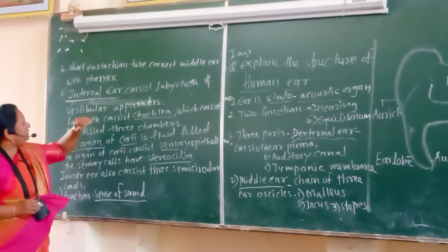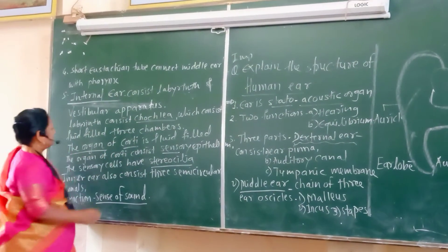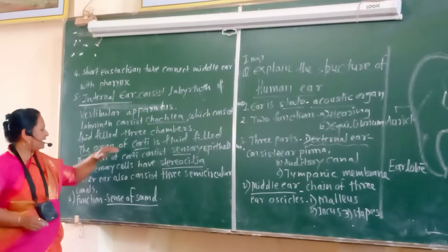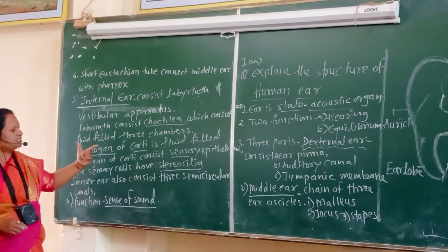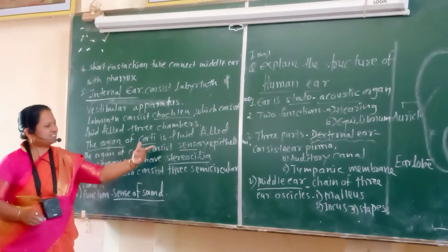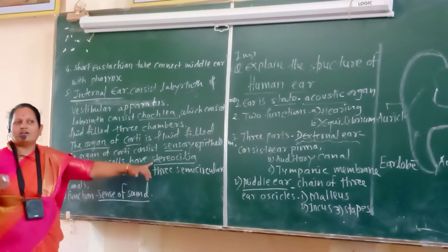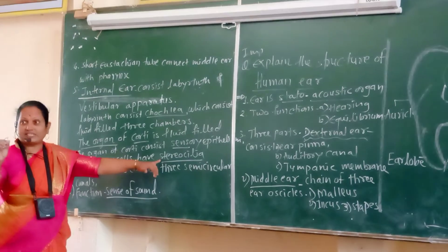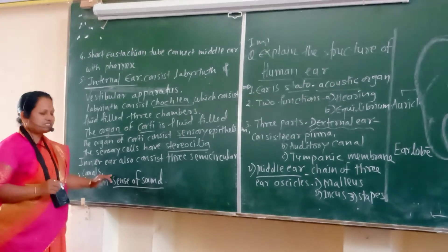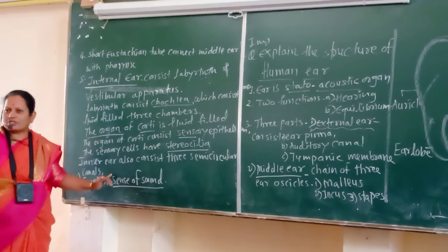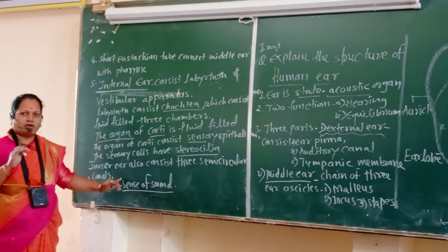Internal ear consists of the labyrinth and vestibular apparatus. The labyrinth consists of the cochlea, which contains three chambers. The organ of Corti is filled with fluid and consists of sensory epithelium called stereocilia, which are sensitive to sound. The inner ear also consists of three semicircular canals, which help in the conversion of sound waves into impulses through the auditory nerve.